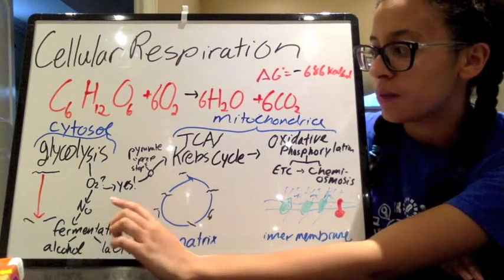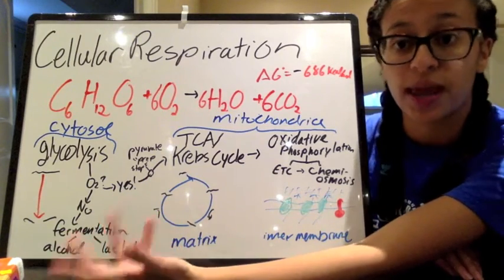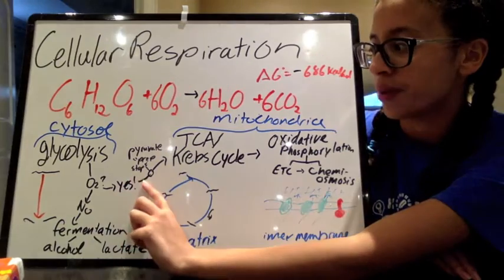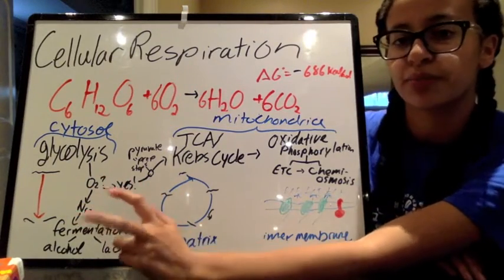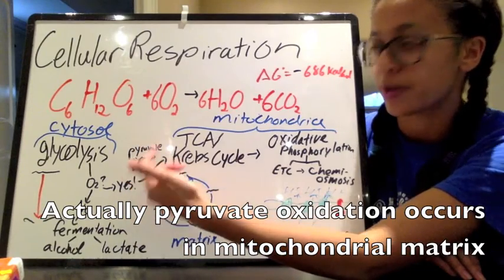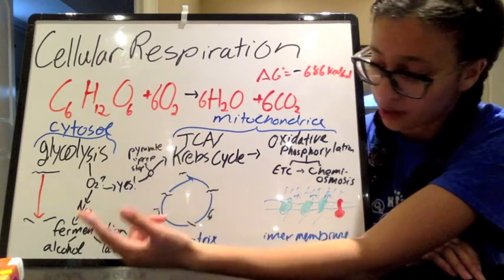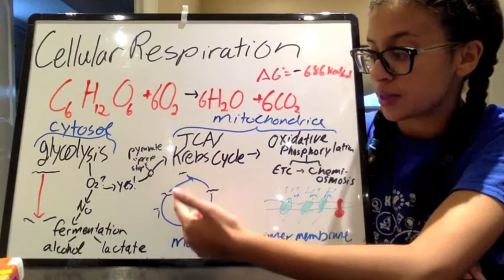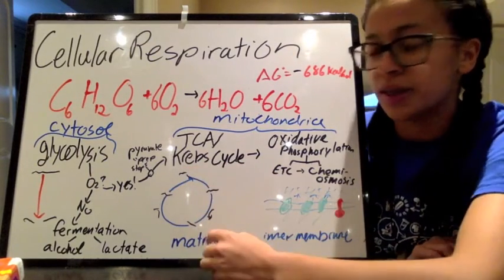But then if you do have oxygen, so in aerobic respiration, then the pyruvate will go through this mini prep step before it can go into the mitochondria. So that is going to transform it into acetyl-CoA. Now acetyl-CoA will go into this Krebs cycle and this Krebs cycle is going to happen inside the matrix of the mitochondria, that's like the part inside inside.